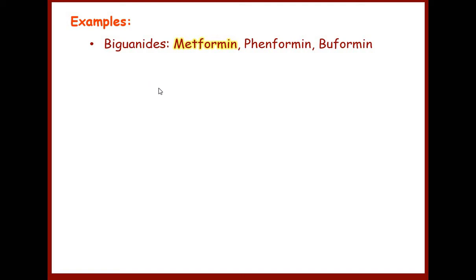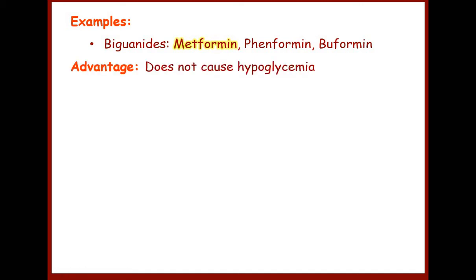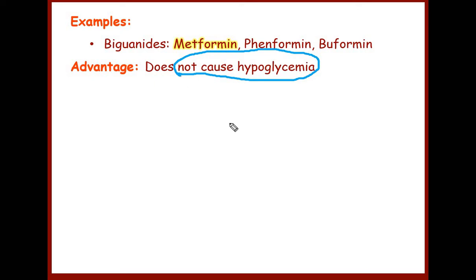The major advantage of metformin and the biguanide class of drugs is that they do not cause hypoglycemia — they are anti-hyperglycemic agents. If a drug is hypoglycemic, it can reduce blood sugar levels even below the basal value, which is normally considered 120 mg/dL. A drug like sulfonylurea can reduce blood sugar even below 120 mg/dL. But with metformin, even in overdose, it will not reduce blood sugar below basal levels — that is why it is called an anti-hyperglycemic agent.